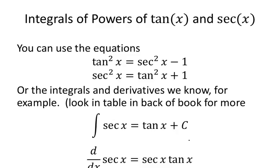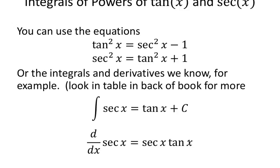You can also use the tangent and secant rules, like tangent squared of x equals secant squared of x minus 1, to simplify difficult integrals into something not nearly so bad. You can use integrals or derivatives you already know, like the integral of secant squared of x is tangent of x. The derivative of secant is secant times tangent, so if you see a secant times tangent, you might use that as a du when you have a secant as a u term.